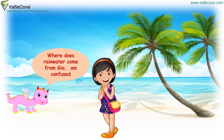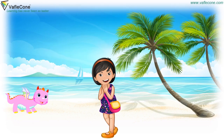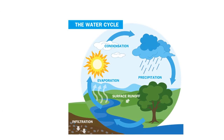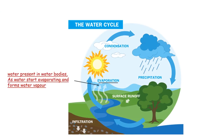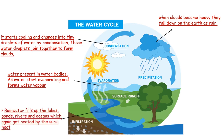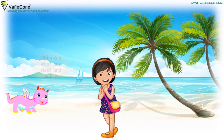Where does rainwater come from, Jiya? I am confused, Dodo! There is a process called the water cycle. It is a natural process in which water continuously changes its form. It occurs due to cooling and heating of water. Evaporation: water present in water bodies starts evaporating and forms water vapour. Condensation: it starts cooling and changes into tiny droplets of water by condensation. These water droplets join together to form clouds. Precipitation: when clouds become heavy, they fall down on the earth as rain. Infiltration: rainwater fills up the lakes, ponds, rivers and oceans, which again get heated by the sun's heat.